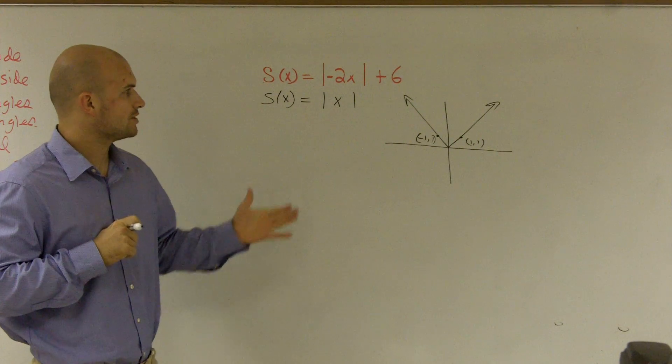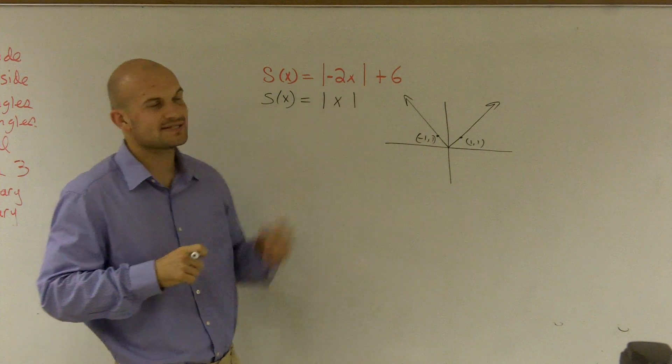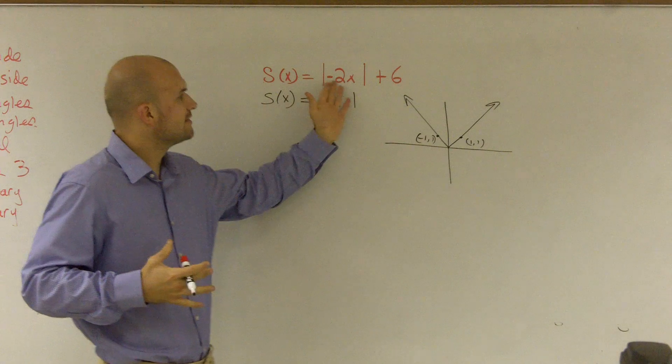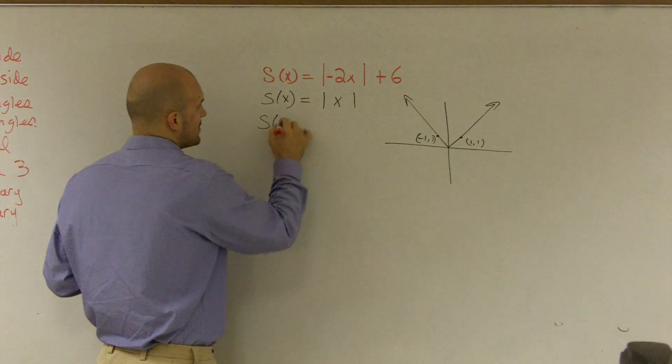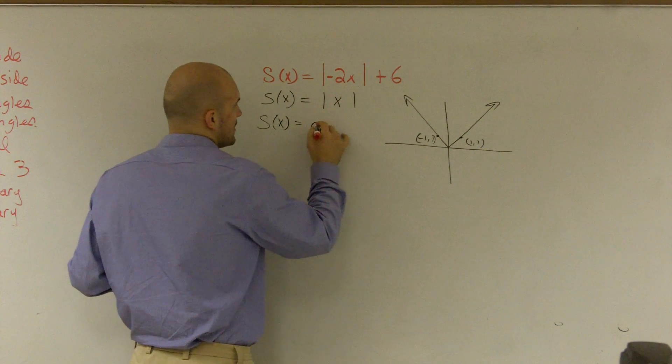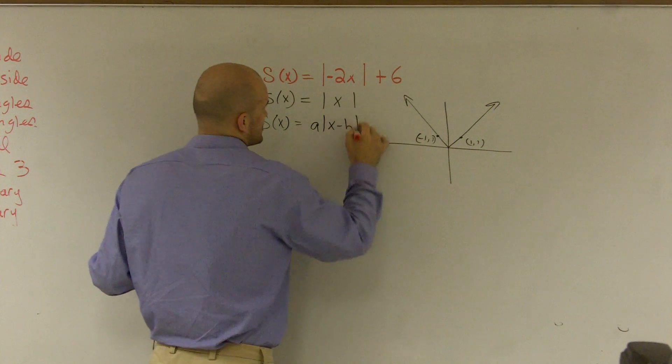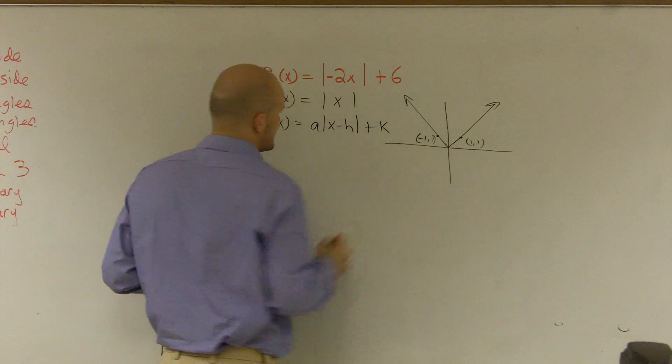So next thing I need to look at is what is this negative 2 and this 6 doing to my function? Well, this negative 2, if you remember your transformation, so if you remember s of x equals a times x minus h plus k...